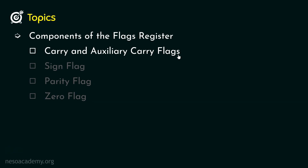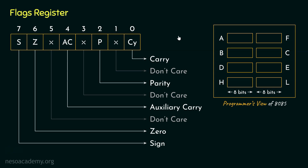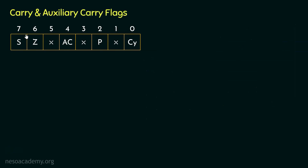Let's begin with the carry and auxiliary carry flags. Before we proceed, I hope you remember in the programmer's view of 8085, which we are eventually completing, we added the flags register and it is also 8 bits. However, among all the 8 bits, we can only use 5 of them. An important point to remember: the bits of this register are affected based on the value stored inside the accumulator register. Now, the carry flag is the least significant bit of the flags register, represented as CY.